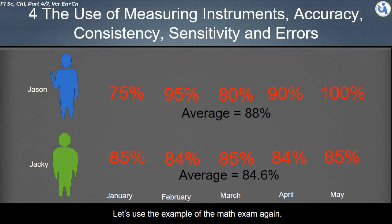Let's use the example of the math exam. Since the exam target is 100% mark, by taking the average of 5 exams, Jason has 88% mark and Jackie has 84.6% mark. Jason performance is closer to 100% mark. We can say that Jason is more accurate in math exam.